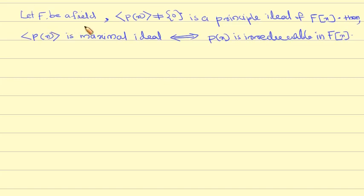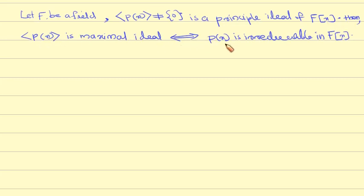Theorem: Let F be a field. If a non-zero ideal of F[x] is a principal ideal, then the ideal generated by p(x) is a maximal ideal if and only if p(x) is irreducible in F[x].